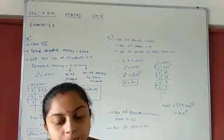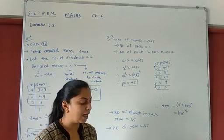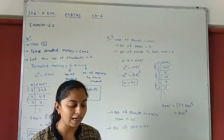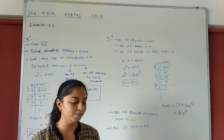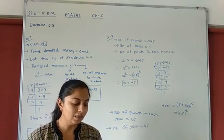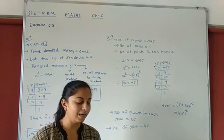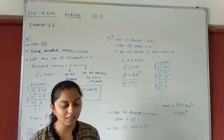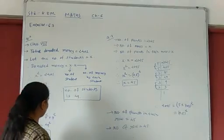Question number 8. 2025 plants are to be planted in a garden in such a way that each row contains as many plants as the number of rows. Find the number of rows and the number of plants in each row — find both.